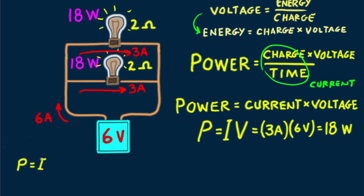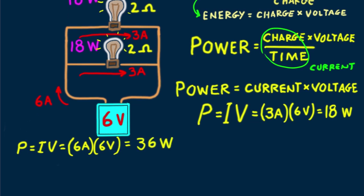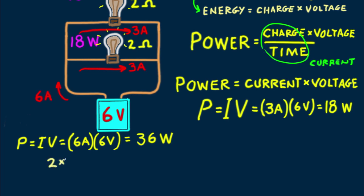What power does the battery supply? 6 amps times 6 volts gives 36 watts. And sure enough, if we add the power in each branch, two bulbs put out 2 times 18 watts equals 36 watts. Check.